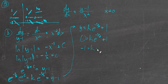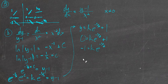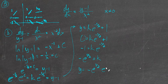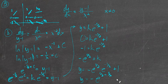So we get negative 1 equals k times e to the negative 1 half, which is k over e to the 1 half power. So we get negative e to the 1 half equals k by multiplying both sides by e to the 1 half. So k is negative e to the 1 half, meaning y equals negative e to the 1 half times e to the negative 1 over x, plus 1. That simplifies to y equals negative e to the (1/2 − 1/x) plus 1. There is our particular solution with the initial condition.